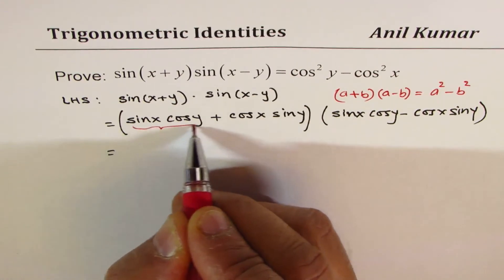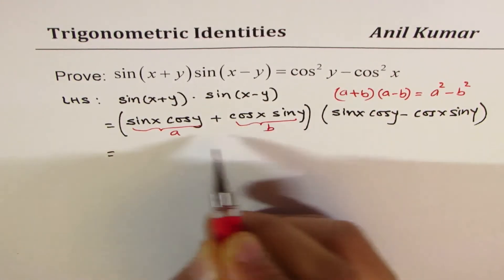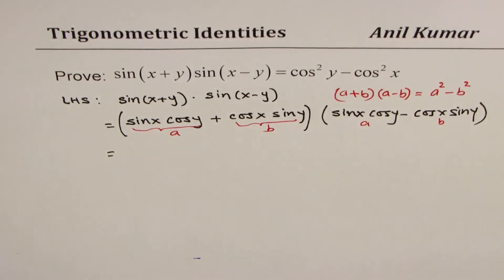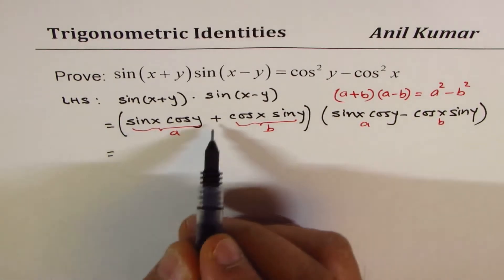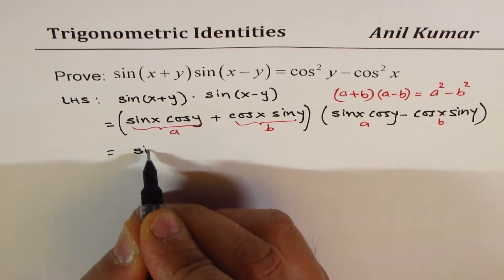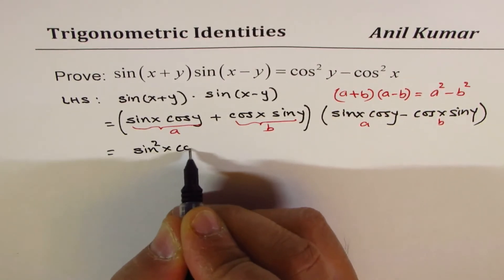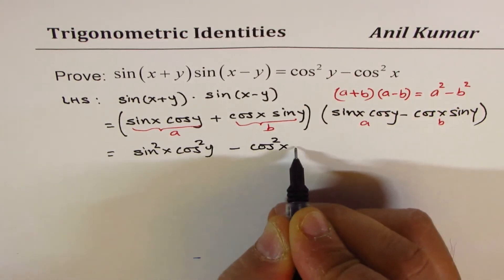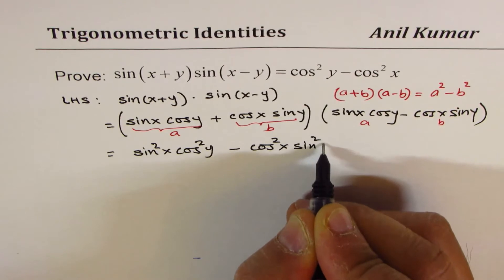Where this term is a and this term is b. So we get straight away the square of this term, which is sin²x cos²y minus cos²x sin²y.